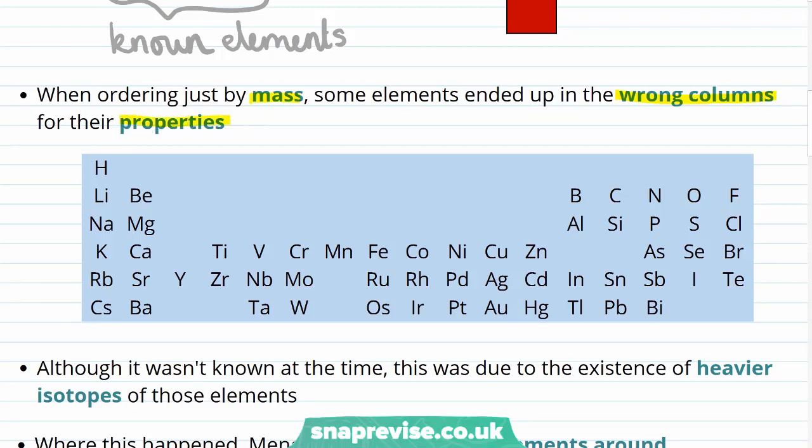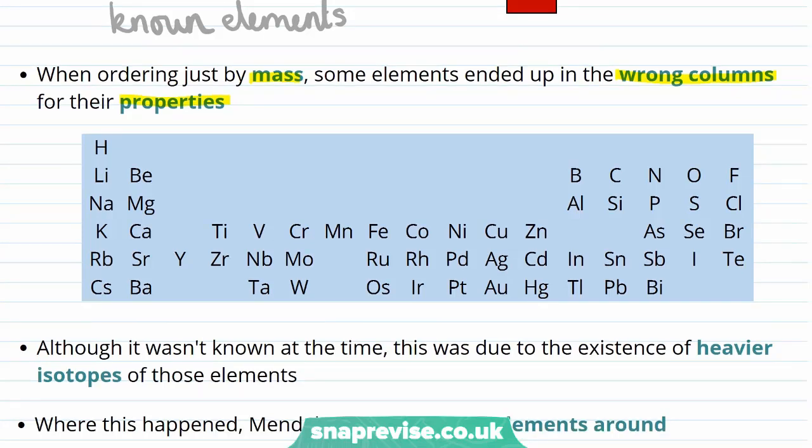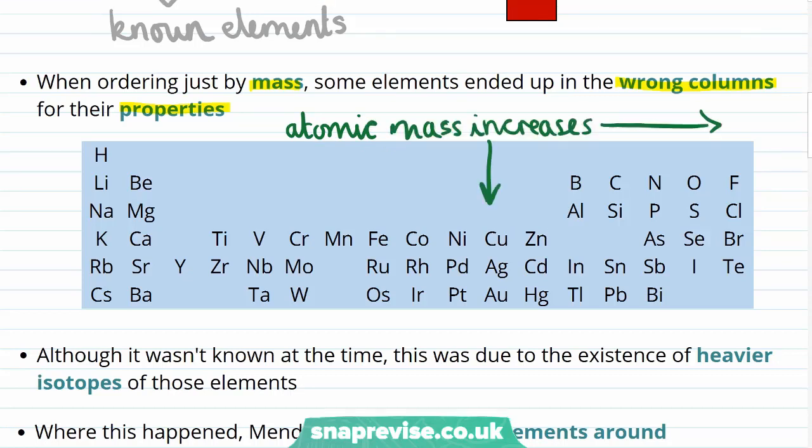For example, in this diagram you can see the representation of the first periodic table, showing the 57 elements that were known about in 1869. Mendeleev ordered the table so that atomic mass increased, going from left to right, and from the top of the table to the bottom of the table. What he observed when he ordered his table just by increasing atomic mass, was that some pairs of elements appeared to be switched around.